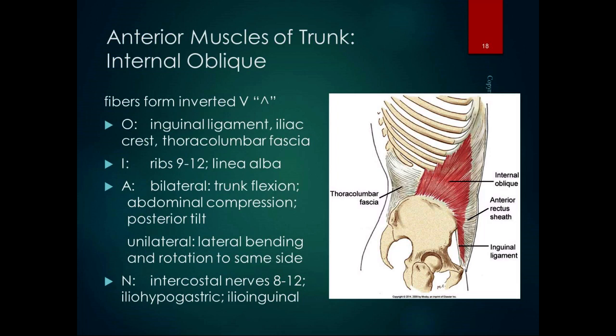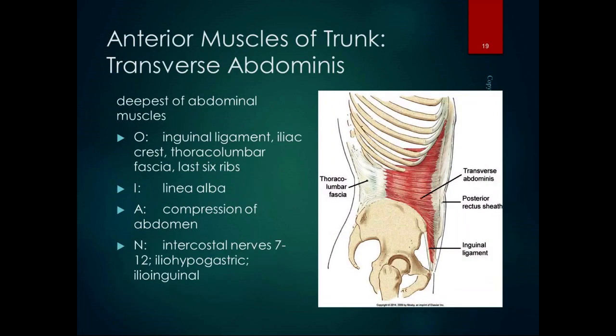The deepest layer of abdominal muscles is the transverse abdominis. It is the only one that does not have a line of pull for flexion — its fiber direction is transverse. It is also the only layer with a physical connection to the lumbar vertebrae through the thoracolumbar fascia. It originates on the inguinal ligament, iliac crest, thoracolumbar fascia, and the last six ribs, swooping around to the linea alba. I call the transverse abdominis your built-in weight belt; some call it the corset muscle.